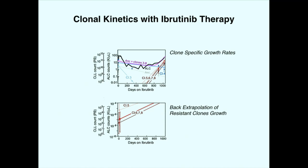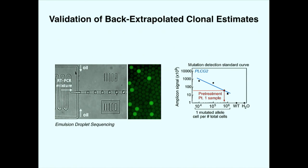We can fit growth patterns to these clones and extrapolate forward for precision prognostication, or try to optimize therapy. Another application is to back-extrapolate over time to estimate the number of resistant cells present on the day the patient received the first drug dose. We arrived at estimates of clone frequencies around one in 500,000 to one in a million, and validated these predictions using droplet sequencing—a very sensitive approach that screens millions of leukemic cells for very rare events—confirming the predicted population sizes prior to treatment.